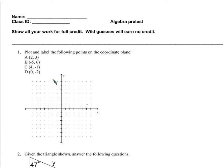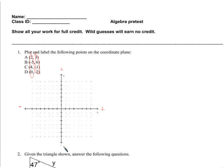Here we have the Cartesian plane. That just means the plane where we agree that this is the x-axis and this is the y-axis. When we write these numbers in a certain order, this is the x and this is the y — just alphabetical order. Positive x's are on this side, negative x's on this side, positive y's and negative y's.